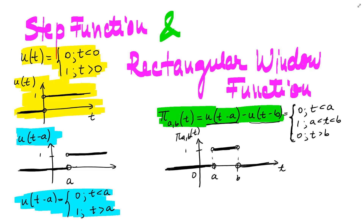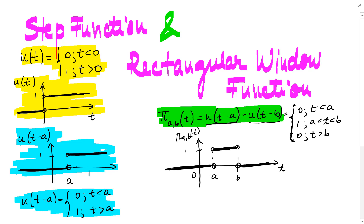u of t minus a is the unit step function shifted a units to the right, and the graph is the one in blue. So it's 0 up to a and 1 from a on — that is, u of t minus a equals 0 for t less than a and 1 for t greater than a.